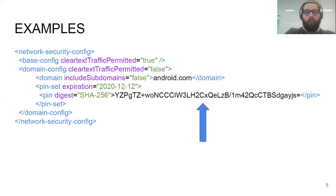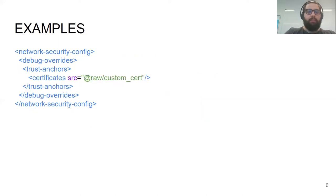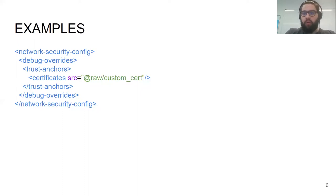On top of that, when we reach this domain, we also have to implement and verify certificate pinning. The last example — let's think that we are troubleshooting some networking issue of our application and we need to trust an additional certificate from our HTTP proxy. Just by using a combination of debug overwrites and a trust anchor node, we can easily set up the application to trust the custom certificate of the HTTP proxy.